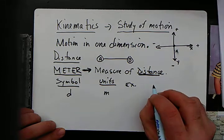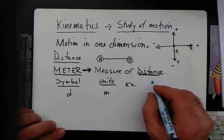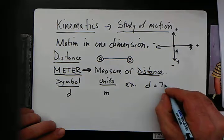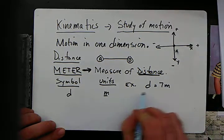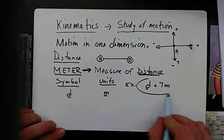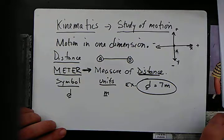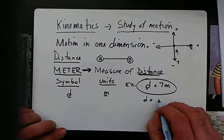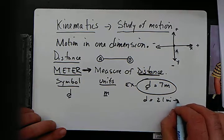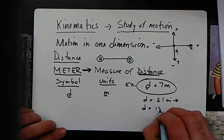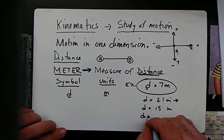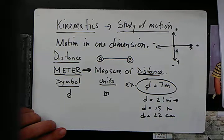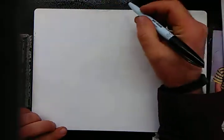The symbol for distance is d and the unit is meters. For example, if I travel seven meters, we write it as: distance equals seven meters. Write down two or three more examples in your notebooks — it could be as simple as: distance is 21 miles, distance is 15 meters, distance is 22 centimeters. Come up with three of your own at this point.